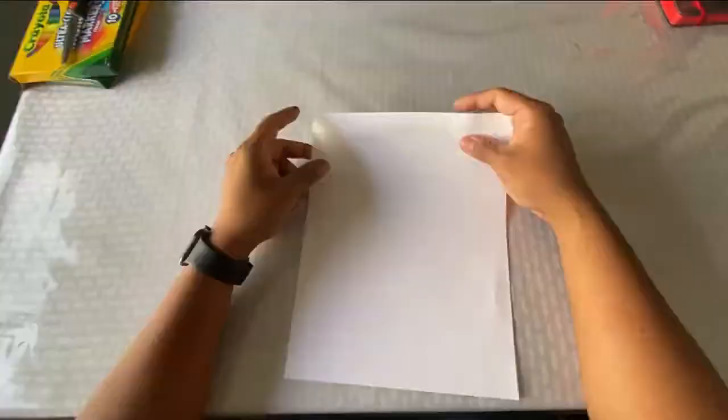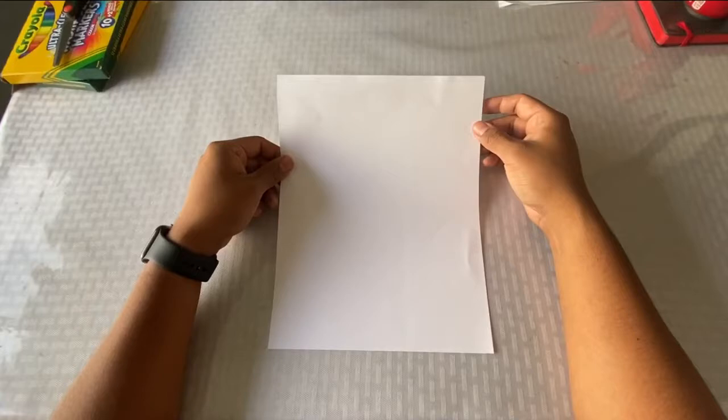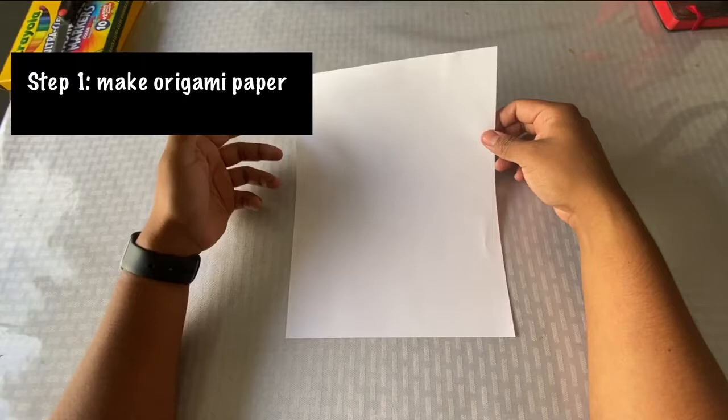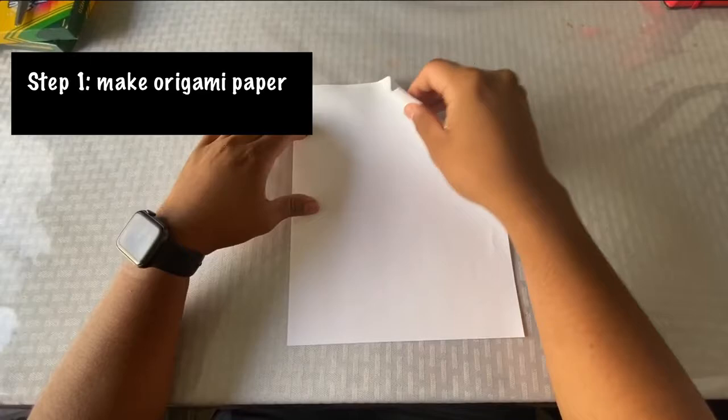And finally, colored pencils or markers. Before we start, we're going to need to make some origami paper. If you have some already, that's great, but if you don't, this is how you make the origami paper. First things first, we're going to grab the right side of the paper and we're going to bring it in all the way to the left.